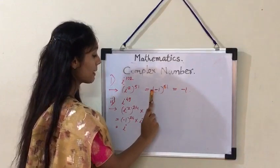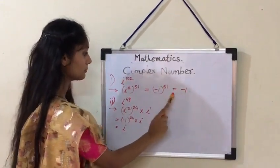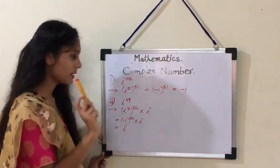So, minus 1 raised to 51 is equal to minus 1, because 51 is an odd number.